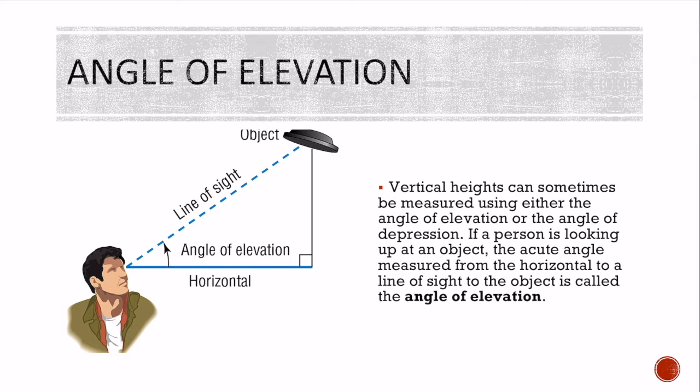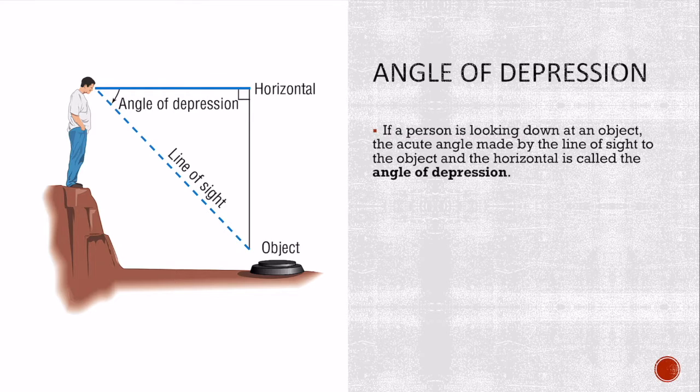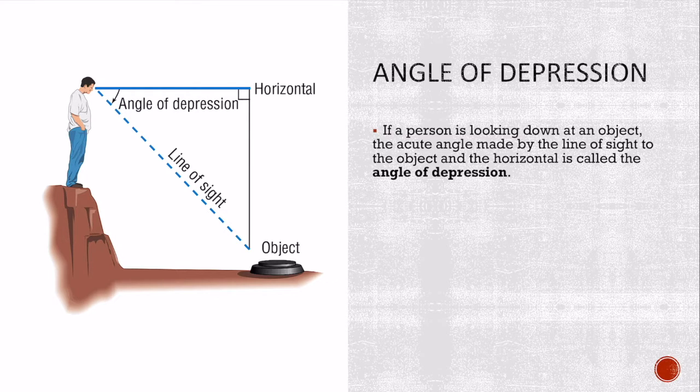So first off, an angle of elevation: vertical heights can be measured using an angle of elevation, that's when you're looking up, or an angle of depression. If a person's looking up at something elevated, that's an angle of elevation, and we call the line of sight to that object the angle of elevation. If someone's looking down on an object, the acute angle made by the line of sight is called the angle of depression, going down.